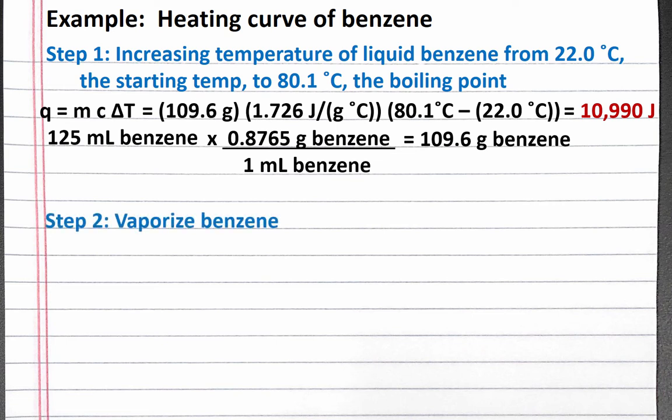Next, we need to vaporize benzene. We're given the enthalpy of vaporization in kilojoules per mole, which we can use as a conversion factor in dimensional analysis to convert between moles of benzene and energy. We'll start the dimensional analysis with 125 milliliters benzene. We can convert from milliliters to grams using the density.